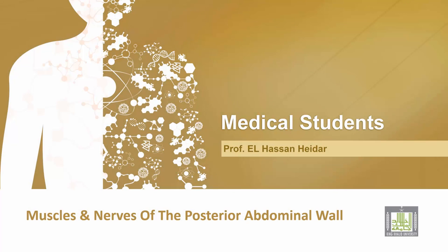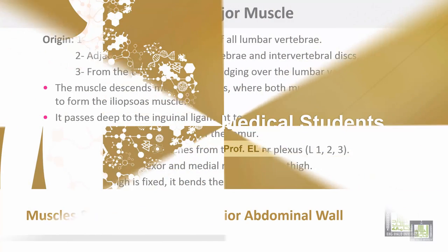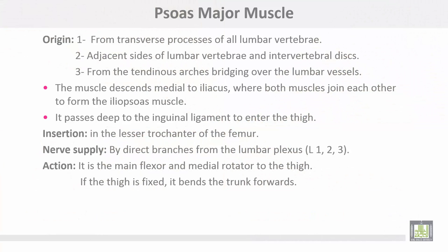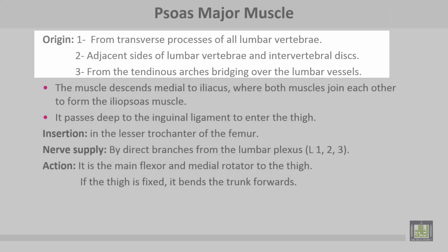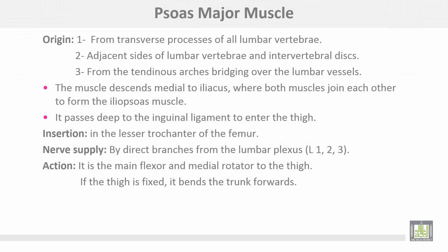Muscles and nerves of the posterior abdominal wall. Number one: psoas major muscle. Origin from the transverse processes of all lumbar vertebrae, from adjacent sides of the lumbar vertebrae and the intervertebral discs, and from the tendinous arches bridging over the lumbar vessels. The muscle descends medial to the iliacus where both muscles join each other to form the iliopsoas muscle. It passes deep to the inguinal ligament to enter the thigh.